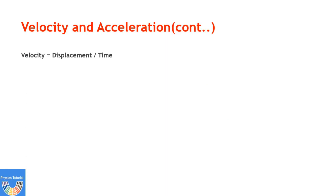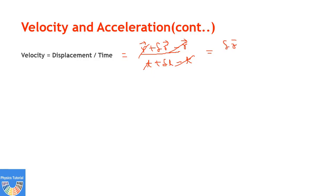Velocity equals displacement divided by time. Displacement equals final position minus initial position, which is (r plus delta r) minus r, over (t plus delta t) minus t. This gives us delta r by delta t. So velocity v equals delta r by delta t. This is velocity expressed in terms of vector differentiation.